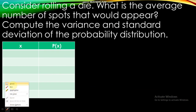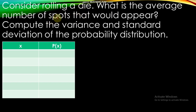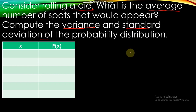For example, consider rolling a die. A die is the singular form of dice — a six-sided die. So what is the average number of spots that would appear? We need to compute the variance and standard deviation of the probability distribution. When rolling a six-sided die, how many possible outcomes are there? There are six possible outcomes.